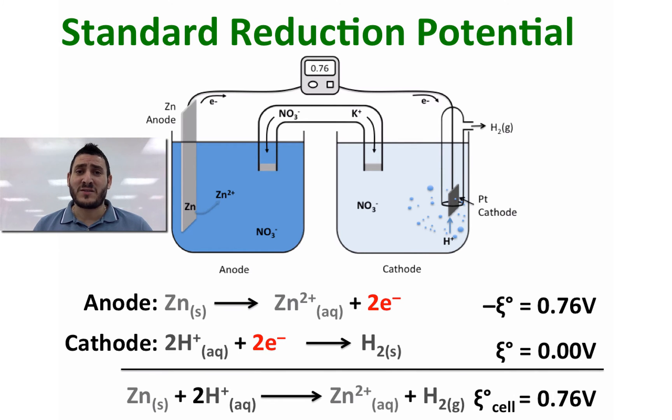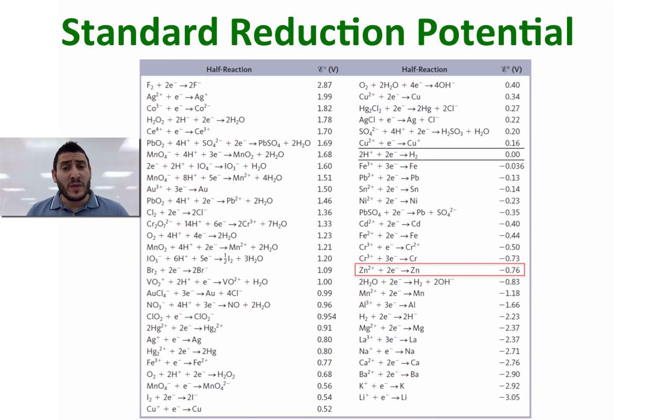The sum of both standard reduction potentials will give us the cell potential. In a similar way we can determine the standard reduction potential of other half equations, as you can see in the following table.